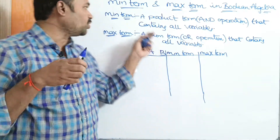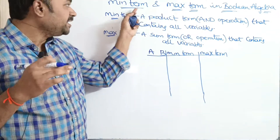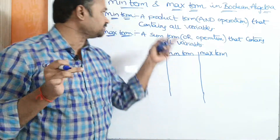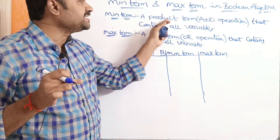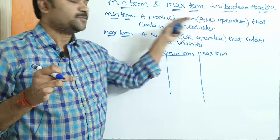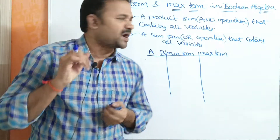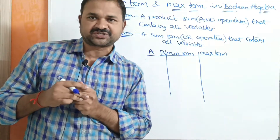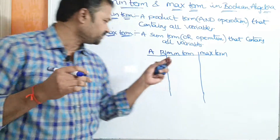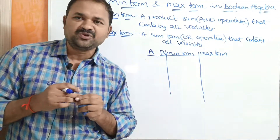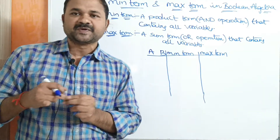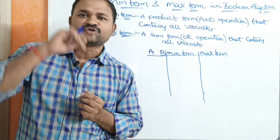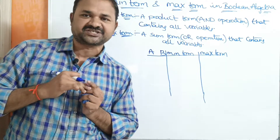Let us discuss mean term and max term in Boolean algebra. A minterm means a product term — a term that contains all the variables under AND operation. Let us take an example. If we have two variables, A and B, then totally we will get 2² = four combinations.